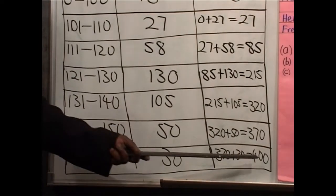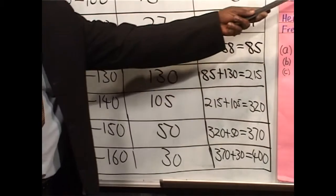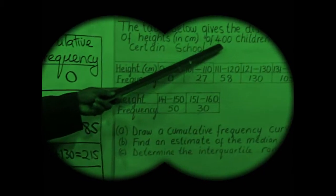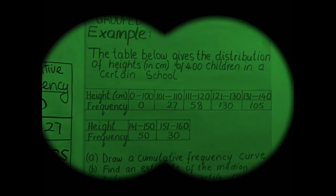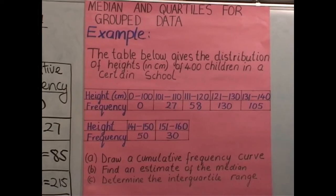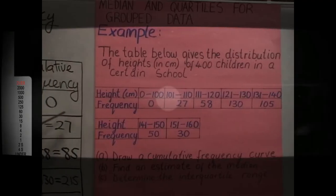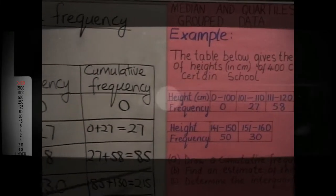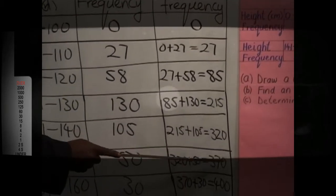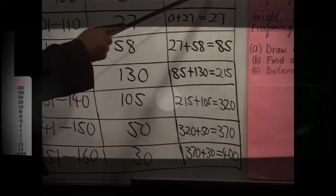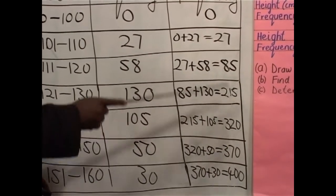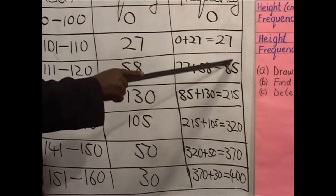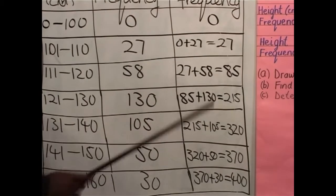This 400, the last figure, should agree. In the question we have been told there are 400 children. So if there are 400 children but here you find 350, then you have made a mistake in your calculations. So the figures that we are getting — 0, 27, 85, 215, 320, 370, and 400 — these are the cumulative frequency.